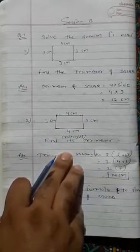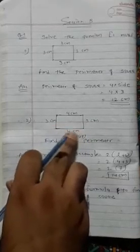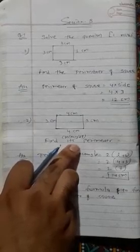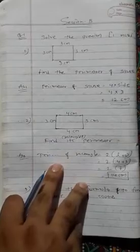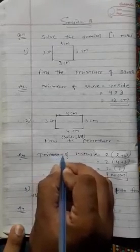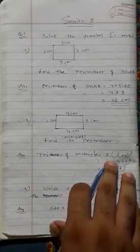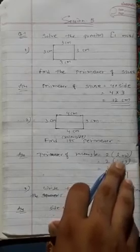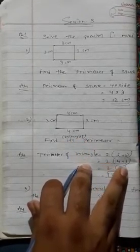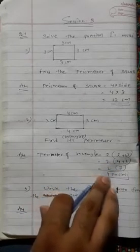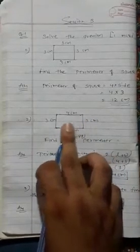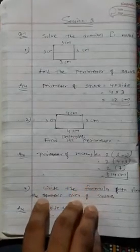Second question: the opposite sides are equal, so this shape is a rectangle. We have to find its perimeter. Perimeter of rectangle equals two brackets L plus W, that means length plus width. So two bracket 4 plus 3 — first calculate the bracket: 4 plus 3 equals 7, then 7 multiplied by 2 equals 14 cm. The perimeter is 14 cm.